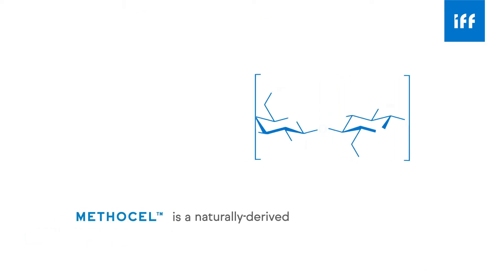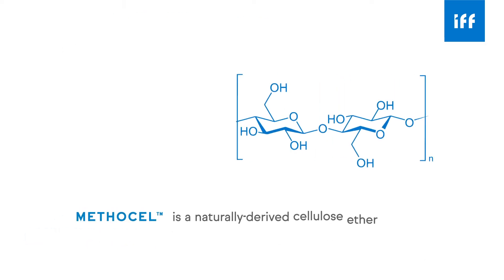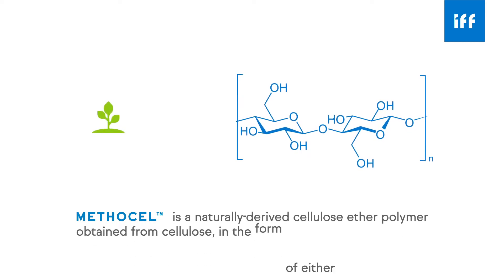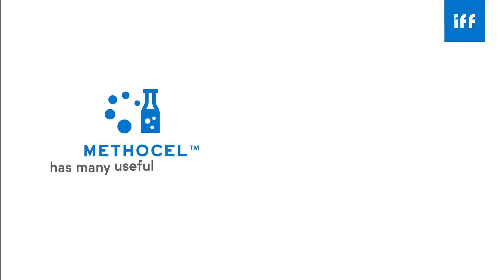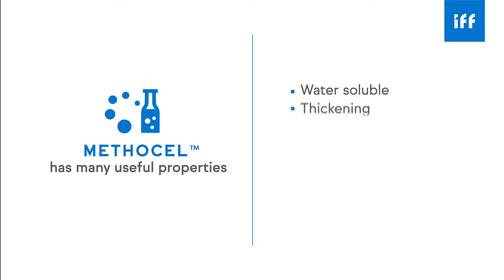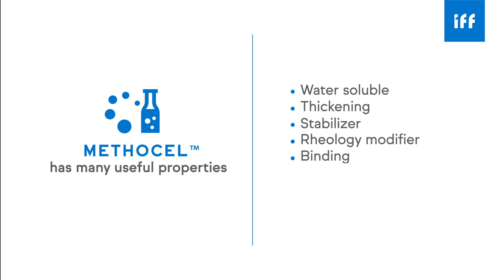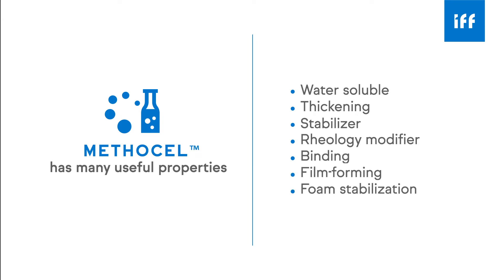Methylcell is a naturally derived cellulose ether polymer obtained from cellulose in the form of either wood or cotton linter pulp. Methylcell has many useful properties — basically it is a water-soluble thickening agent, stabilizer, and rheology modifier. It has unique binding, film forming, and foam stabilization properties.